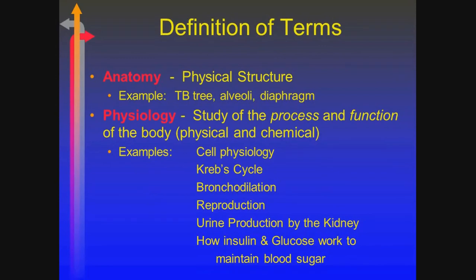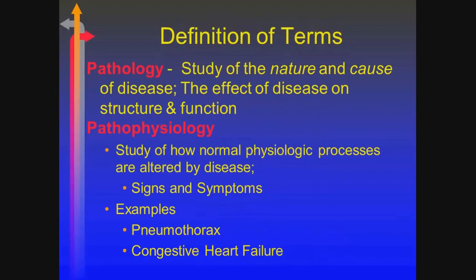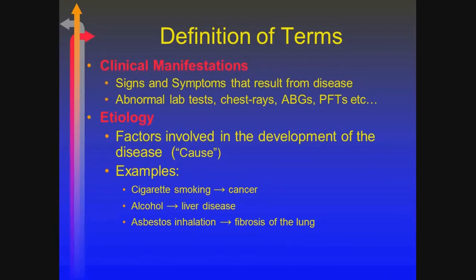Anatomy deals with structure. Physiology deals with processes and functions. Pathology is basically the study of the nature and causes of disease — how structural changes lead to functional changes, leading to impairment of the cardiopulmonary system. Pathophysiology is how these processes are manifested through signs and symptoms that we can assess. In the case of a pneumothorax or congestive heart failure, both will lead to difficulty in breathing, though the reasons are different. Clinical manifestations include signs and symptoms, but also laboratory data, chest x-rays, and CAT scans.